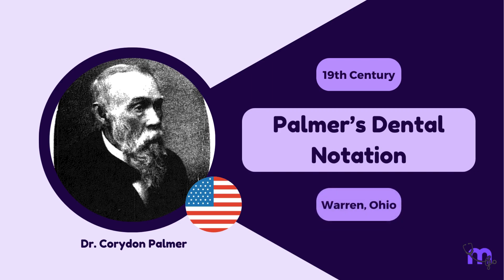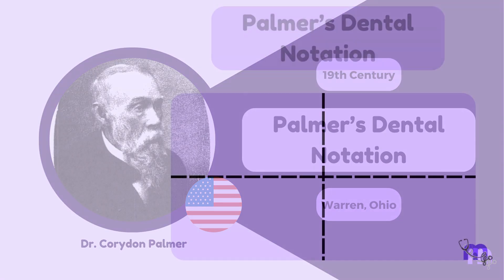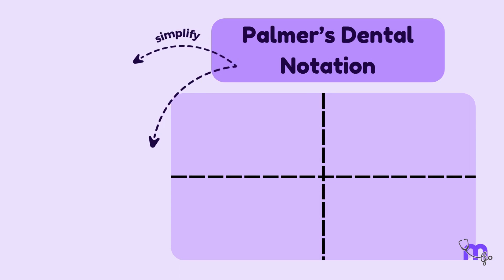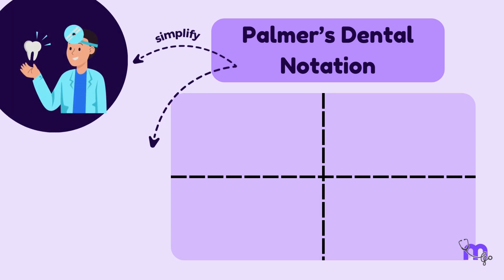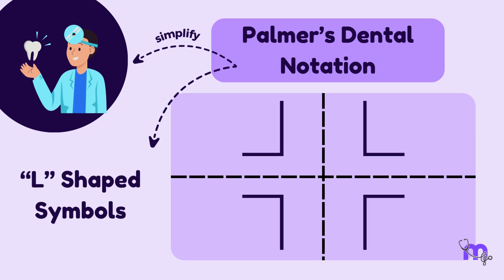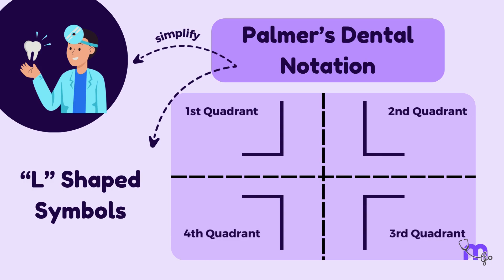The Palmer dental notation was named after the 19th century American dentist Dr. Coridon Palmer from Warren, Ohio. This system was developed by Dr. Palmer as a means of simplifying tooth notation for dental professionals. It consists of different L-shaped symbols indicating the quadrant in which the tooth is found, and a number indicating the position from the midline.